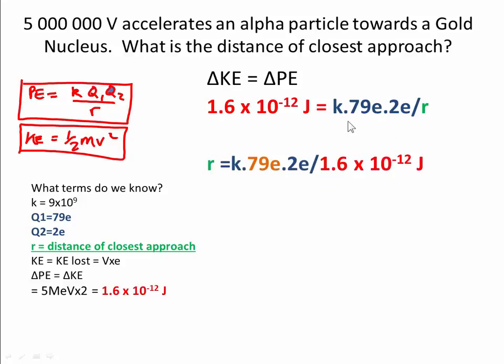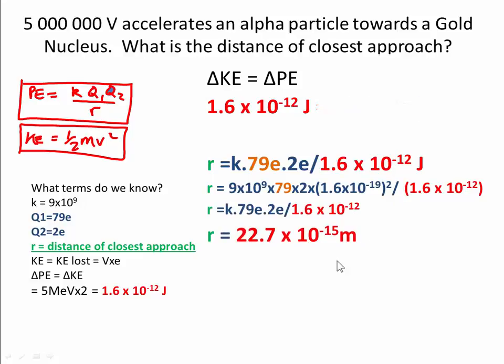R is equal to K times by 79E. The 79E is the charge on the gold nucleus. This is the charge on the alpha particle divided by 1.6 times 10 to the minus 12. We work that through and we end up with a value of 22.7 times 10 to the minus 15 meters. So this is basically how close this alpha particle will get to the nucleus.